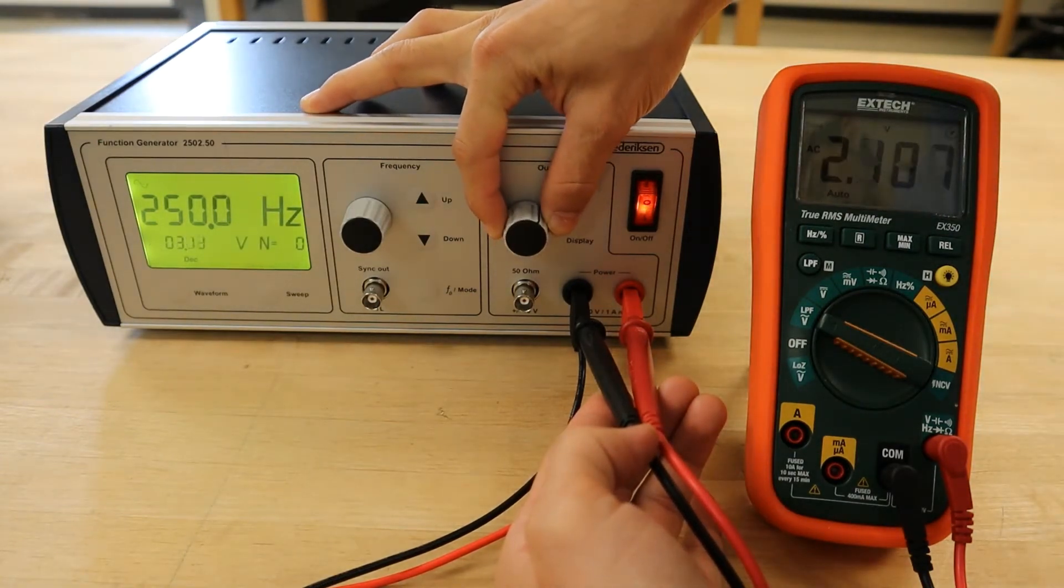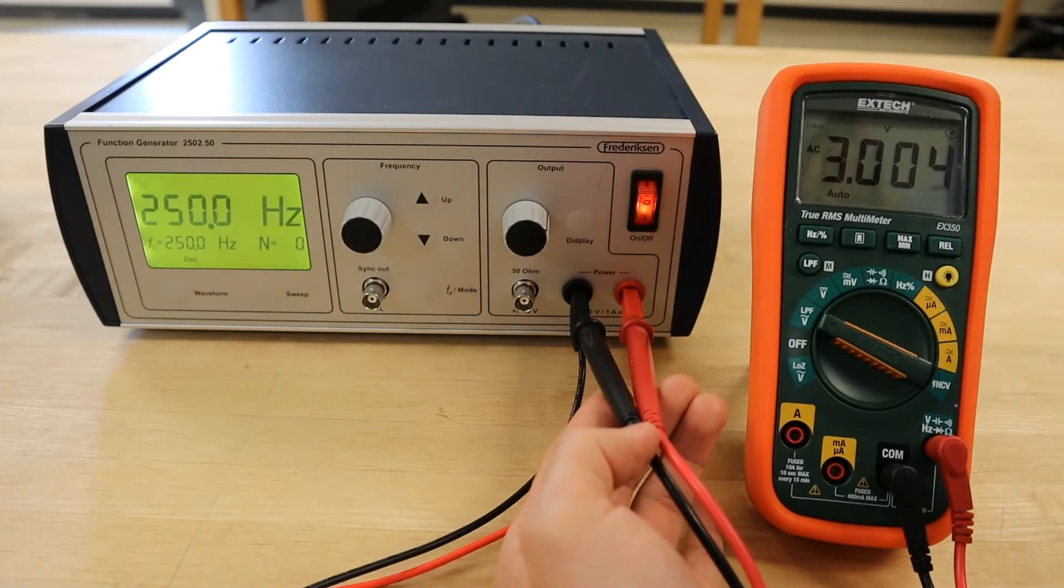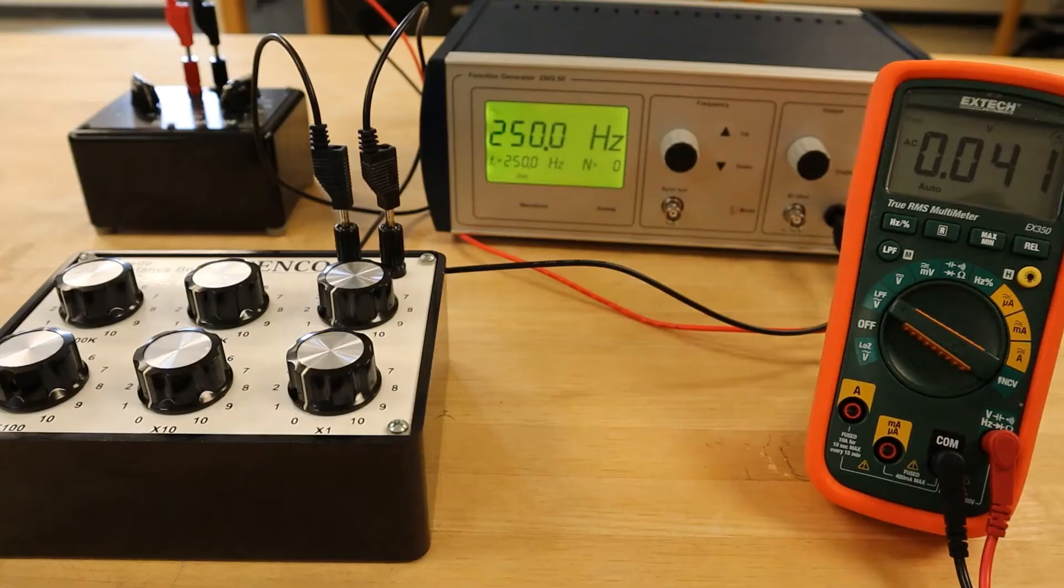It is also noteworthy that because this is an AC circuit, and there is a phase shift involved, the sum of the voltage drops across the components will not add up to the supply RMS voltage.